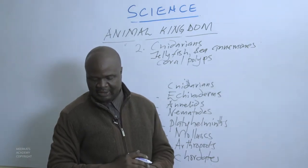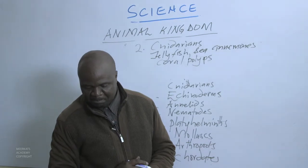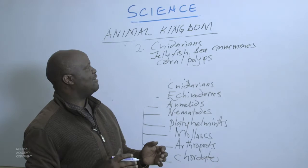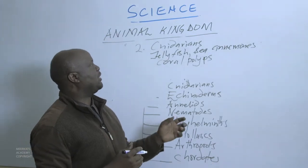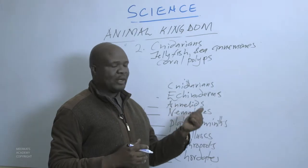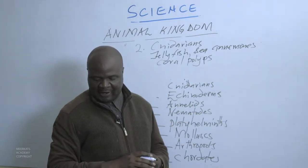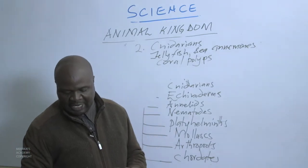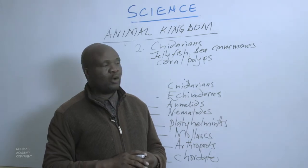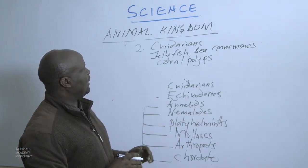Another characteristic dominant among Cnidarians is that they have radial symmetry and only one body opening. Unlike Porifera, when we come to Cnidarians, they have only one opening. That one opening is used to take in food, and the same opening is also used to eject waste products from their body.